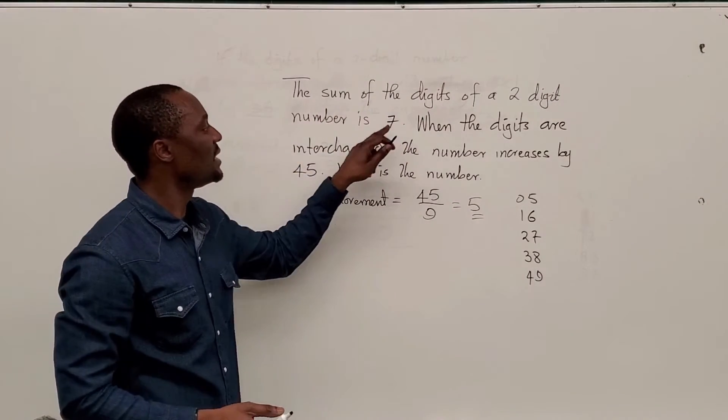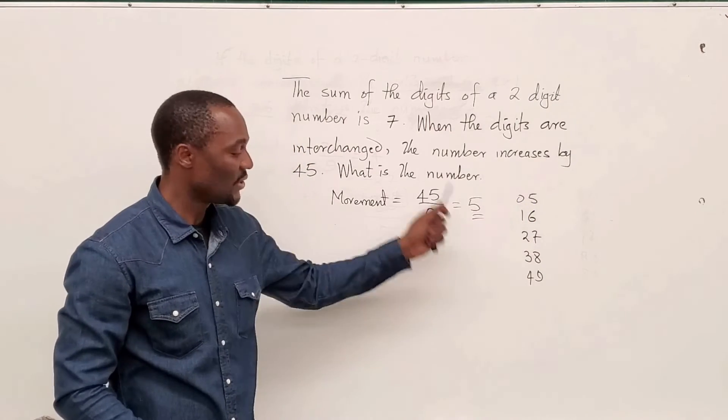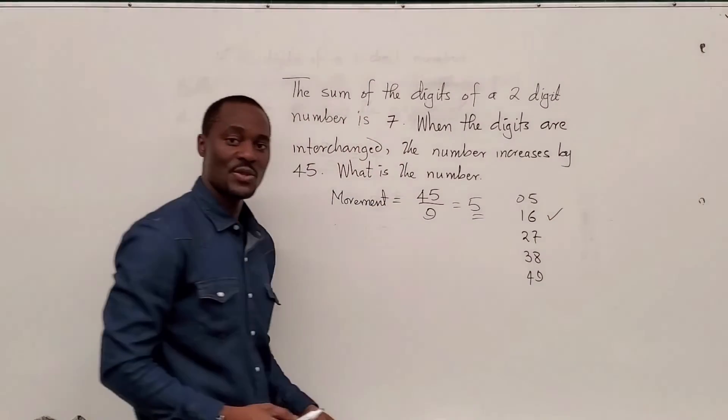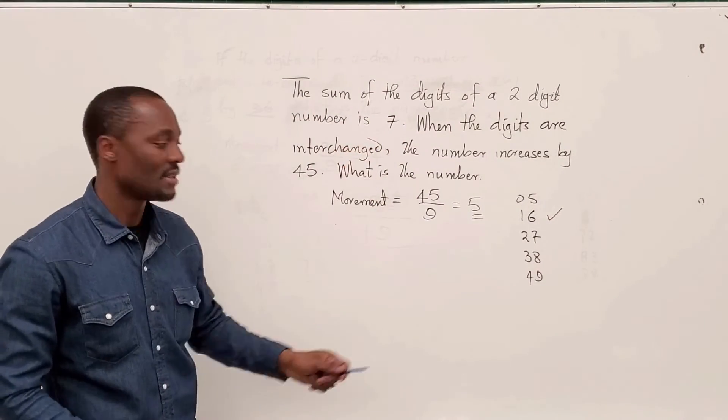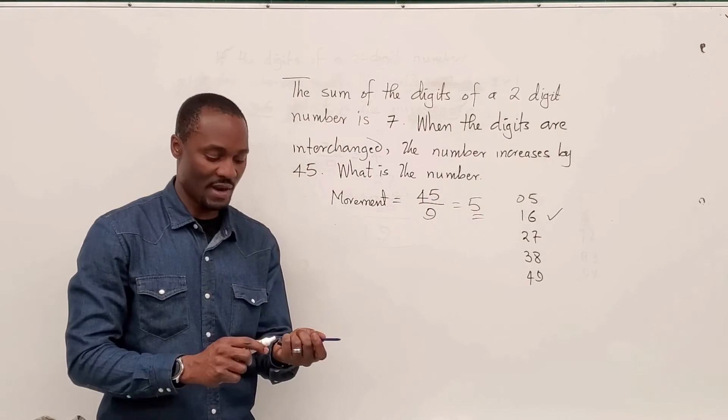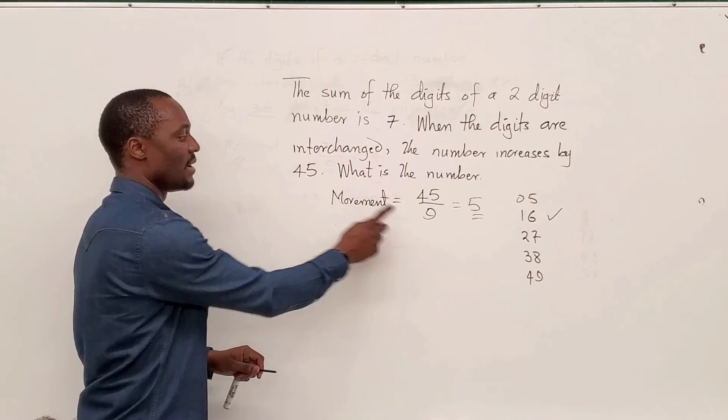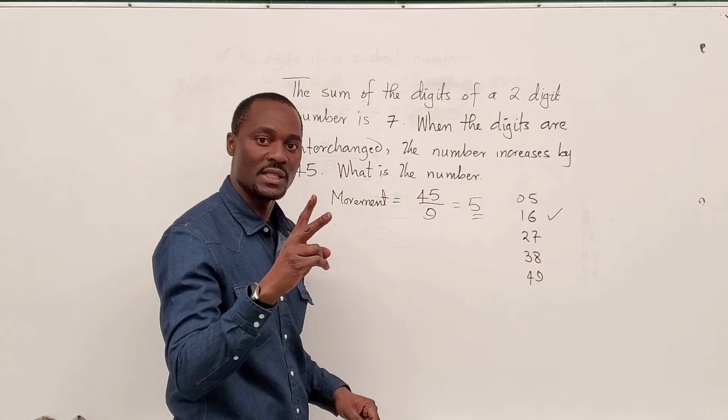The sum of the digits is seven. Which of these, such that when you add this to this, will you get seven? There's only one option. So the original number was 16 because one plus six will satisfy this. Every other option will not satisfy that. That's the quick way. So just look for the change.